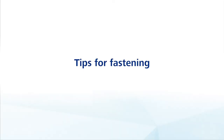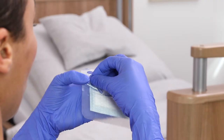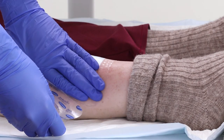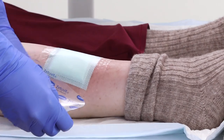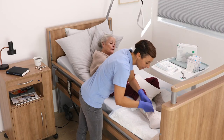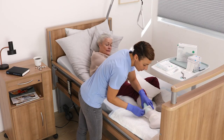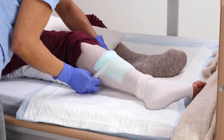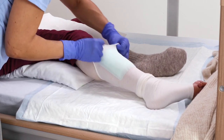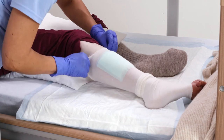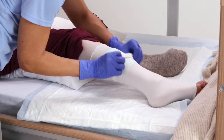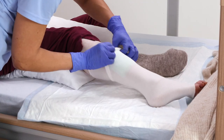Tips for fastening. If dressing changes are rare, self-adhesive wound dressings are a good choice. On the other hand, if the dressing is changed frequently, a wound dressing with a fixing bandage and, if necessary, a flexible tubular bandage that adapts to the contours of the body is recommended for additional support.